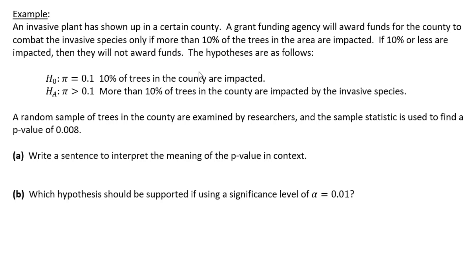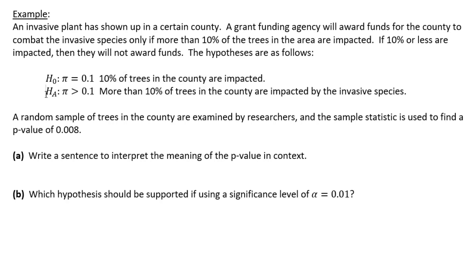The hypotheses we're given are as follows. The null hypothesis is that pi equals 0.1. In context, that means 10% of trees in the county are impacted by this invasive plant. The alternative is that pi is greater than 0.1 — that more than 10% of the trees are impacted by the invasive species.